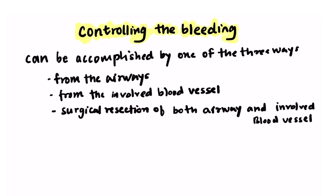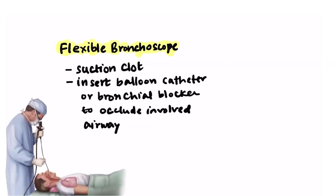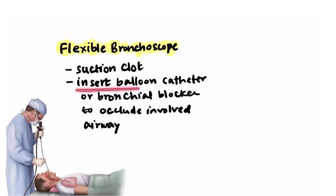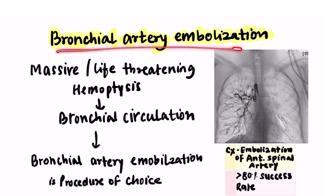For airways, there are two options: flexible bronchoscope and rigid bronchoscope. The flexible bronchoscope is used for suctioning of clots and for inserting a balloon catheter or bronchial blocker to occlude the involved airway. Rigid bronchoscopy is performed by a pulmonologist or thoracic surgeon and can use photocoagulation and cautery to stop bleeding. For blood vessel control, bronchial artery embolization is an option.